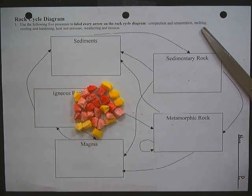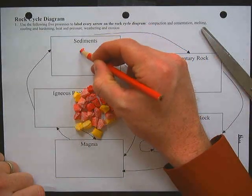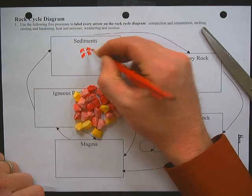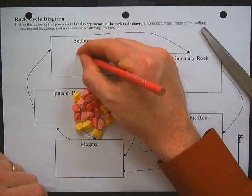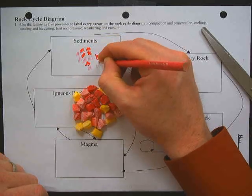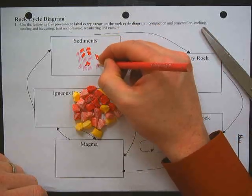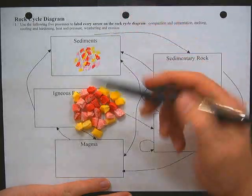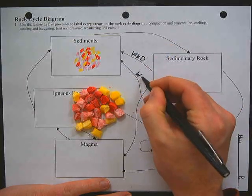Now that we have all of our sediment made — all been weathered down through the WED process — we're going to sketch that out using the same colors as our Starburst candies. We went through weathering, erosion, and deposition to make our sediments, so every arrow pointing to the sediments I'm going to label with WED.